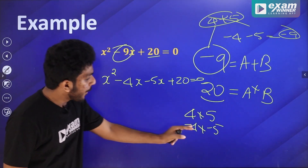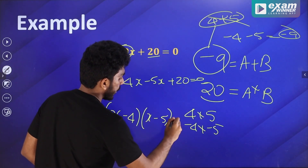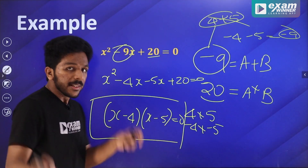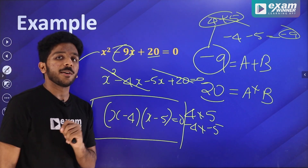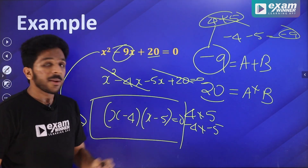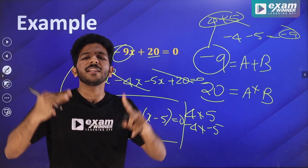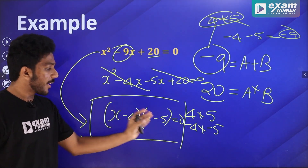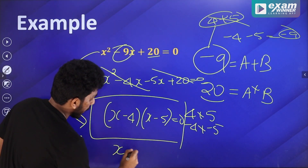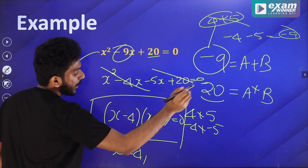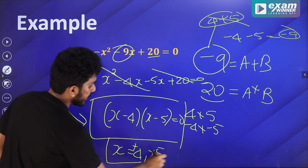We take minus 4x minus 5x plus 20, factor as x(x minus 4) minus 5(x minus 4), giving (x minus 4)(x minus 5) equal to 0. So x minus 4 equals 0 gives x equal to 4, and x minus 5 equals 0 gives x equal to 5. The answer is x equals 4 and x equals 5.